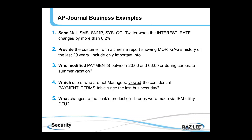Some business examples of how AP Journal could be used: for example, to send a message, an email, or perhaps a text message when the interest rate changes by more than 0.2%; to provide a customer with a timeline report showing how details in their mortgage have changed over the last 20 years — since mortgages have a life of their own with payments, guarantors, etc. changing over time; to track who modified the payments database overnight or during the summer vacation; or to determine which users who are not managers actually viewed a confidential table since the last business day.